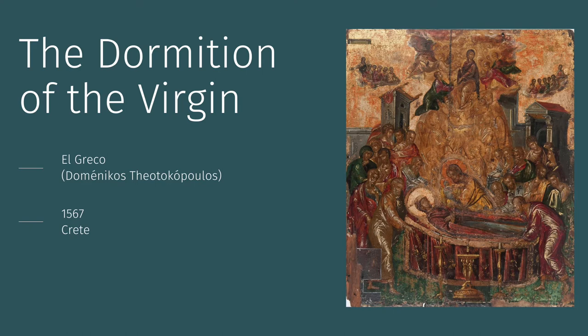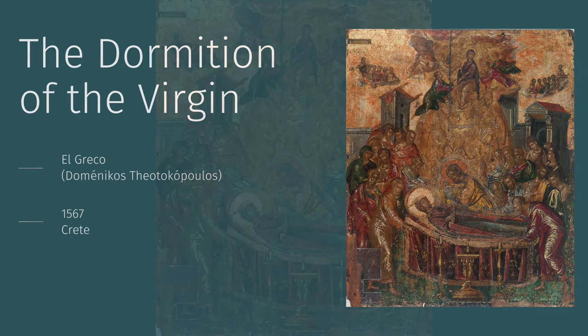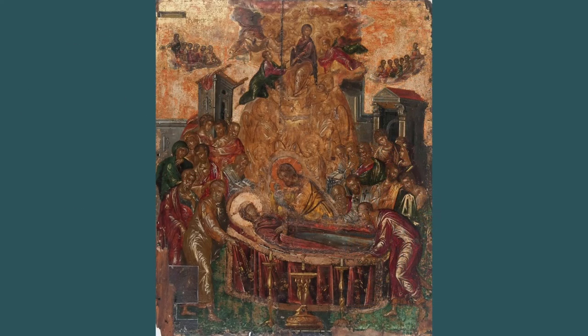This work dates from early in El Greco's career, around 1567. It shows the Dormition of the Virgin, or the moment when the Virgin Mary died without any suffering. Due to its religious nature, this work is considered an icon, and it's still found in the church that commissioned it.